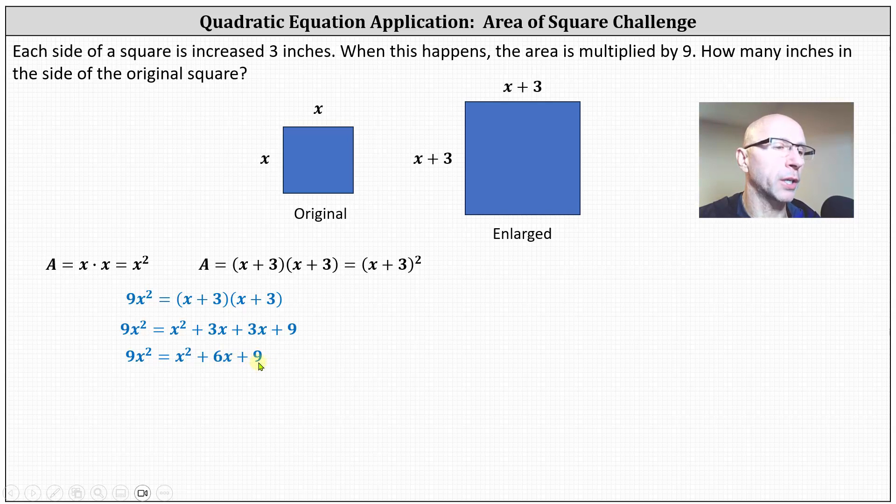Because we have a quadratic equation, let's set the left side equal to zero by subtracting nine x squared on both sides. This gives us zero equals negative eight x squared plus six x plus nine.